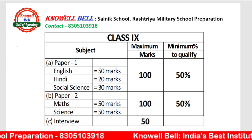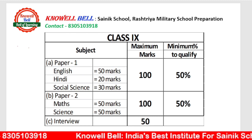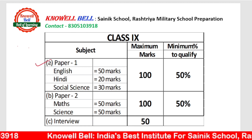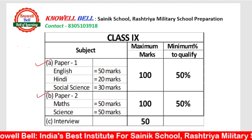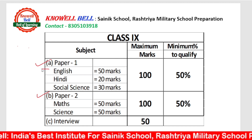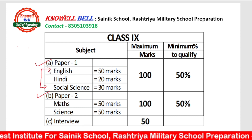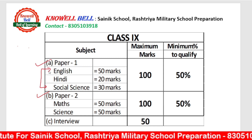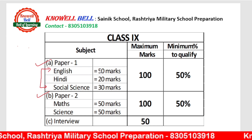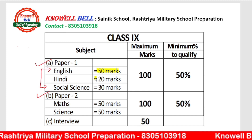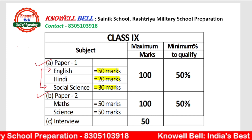In the Rashtriya Military School entrance exam, you will conduct basically two papers — Paper 1 and Paper 2. For class 9, Paper 1 will have English, Hindi, and Social Science. English will be 50 marks, Hindi will be 20 marks, and Social Science will have questions for 30 marks.